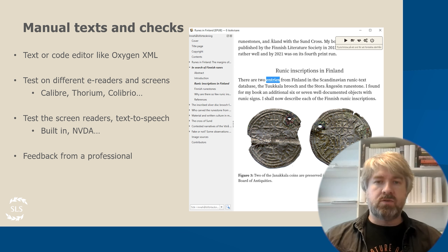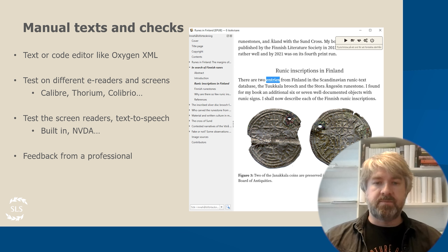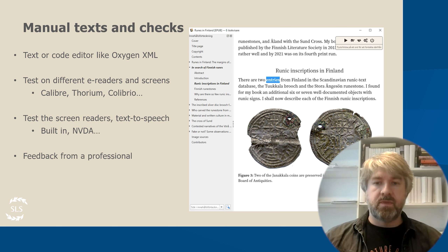A good editor can also alert you if the code isn't well formed. After everything looks good, I run at least AceByDaisy just to make sure everything is still in order. Passing the basic checkers is a good start, but the eBook or ePub might still have a lot of accessibility issues, or at least things you can improve on, so some form of manual testing is still needed. I highly recommend doing some manual scrolling and testing in different eReaders, like Calibre, Thorium, or Calibrio, preferably also in a few different devices and screens, to make sure there are no big issues with scaling or footnotes or anything like that.